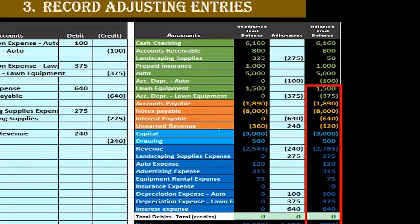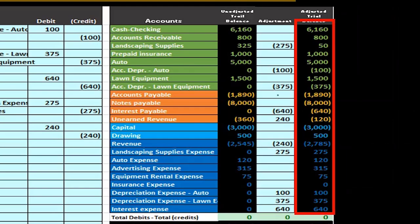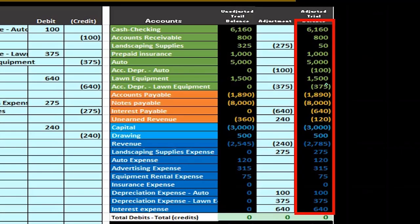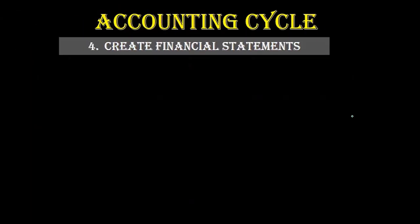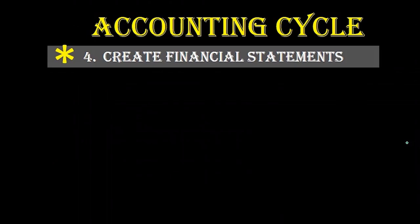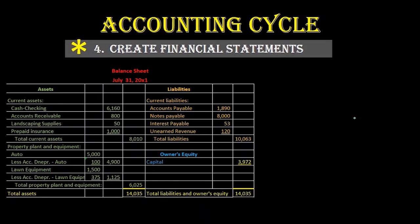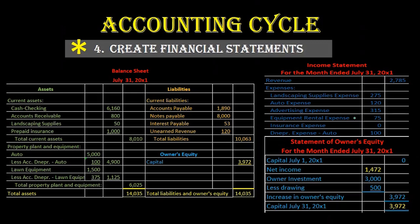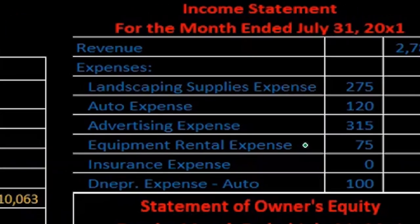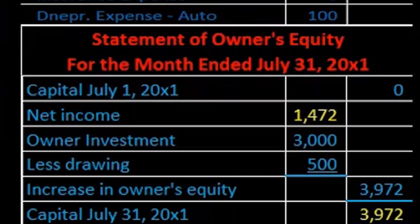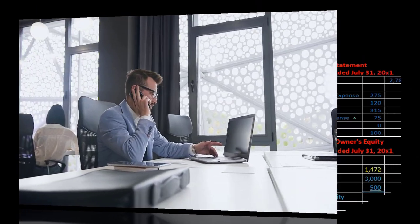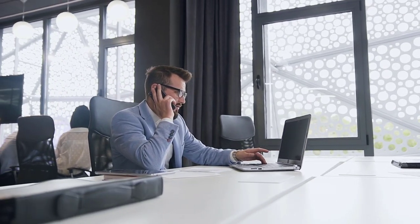Then we take the adjusted trial balance — the one that has been adjusted via those adjusting entries to put it on an accrual basis or as close to it as possible — and use it to create the financial statements: the end product. This is what we're trying to get to: the balance sheet, the income statement, and the statement of owner's equity. In financial accounting, this is our product going out to external users, and also the main basis for most managerial accounting reports used internally.